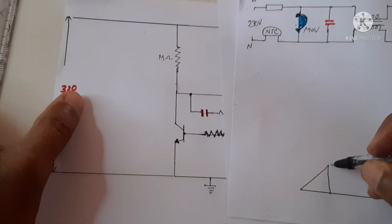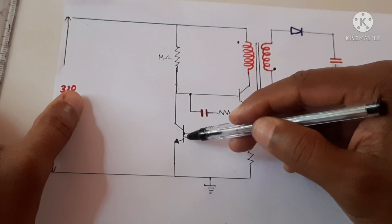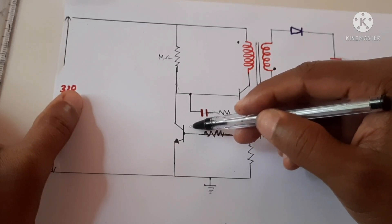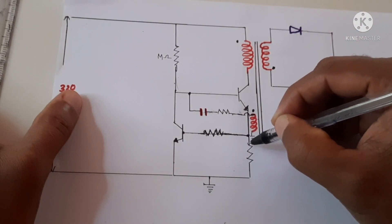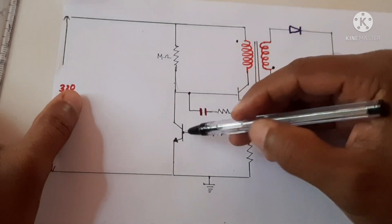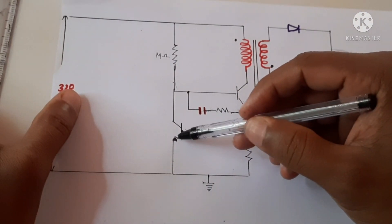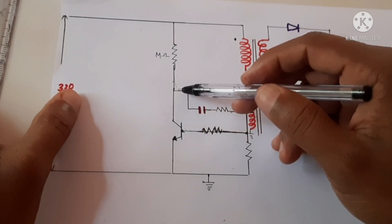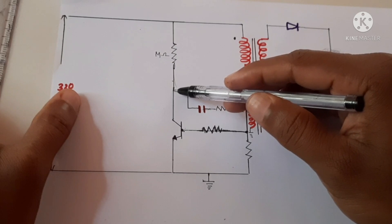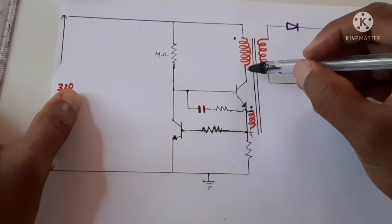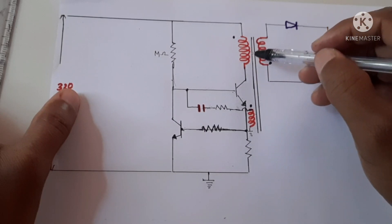When this current reaches its maximum value, the voltage at this point — the resistor is selected such that the voltage across it will be 0.6 volt at maximum current. When this voltage reaches 0.6 volt, this second transistor will turn on. The emitter of this transistor is connected to ground, so when it turns on this point becomes grounded — zero volts. When this point is zero volt, the main transistor will turn off.